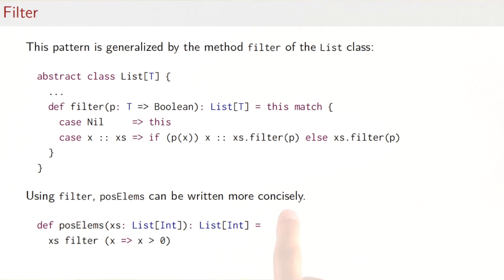Again, using filter, we can write posElems much more concisely. We would just write XS filter X such that X is greater than zero.